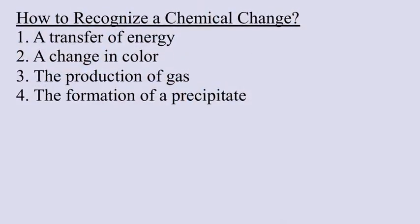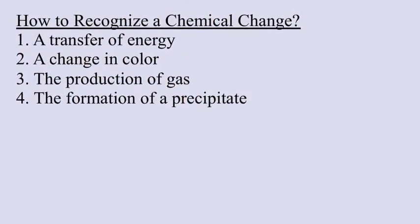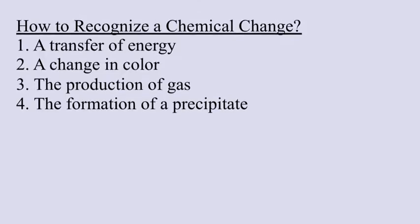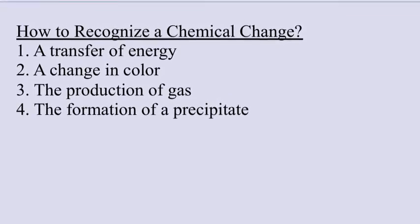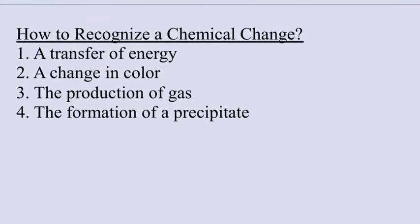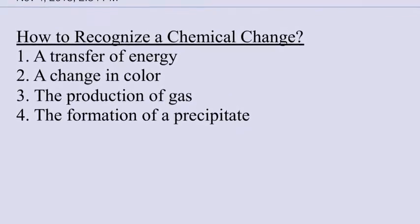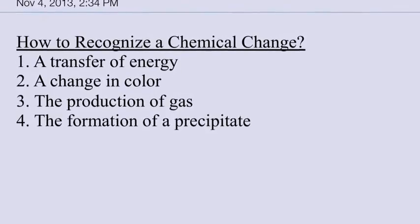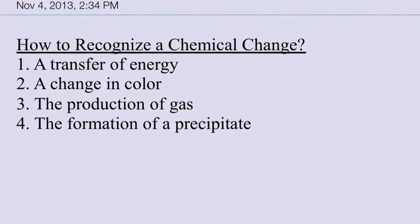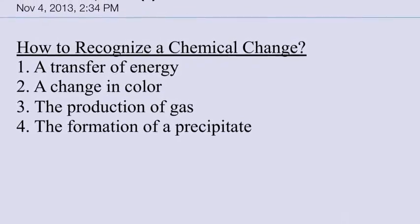This is Elise Harmon and I'm going to talk about how to recognize a chemical change. There are four ways to do this: a transfer of energy, a change in color, the production of gas, and the formation of a precipitate.